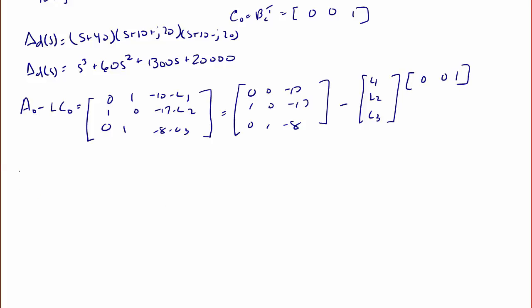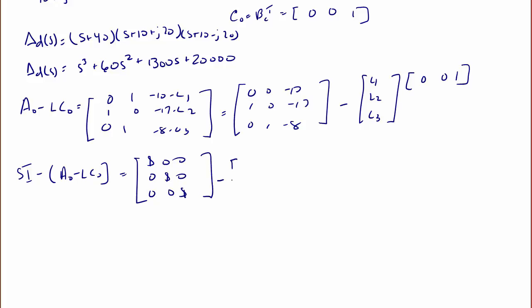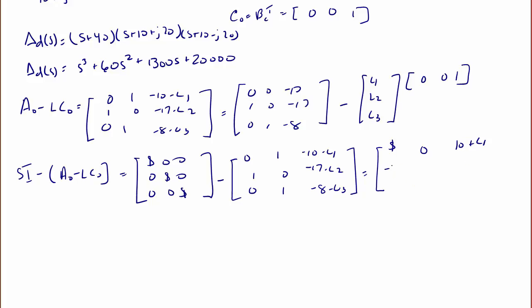Next we find S*I minus (A_0 minus L*C_0). Subtracting gives us the matrix [S, 0, 10+L1; -1, S, 17+L2; 0, -1, S+8+L3].